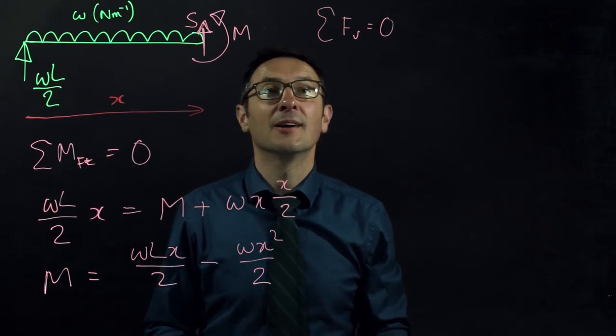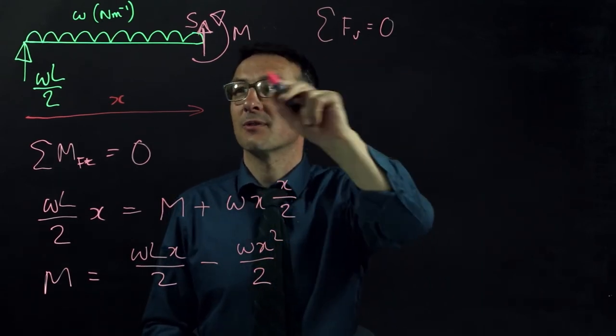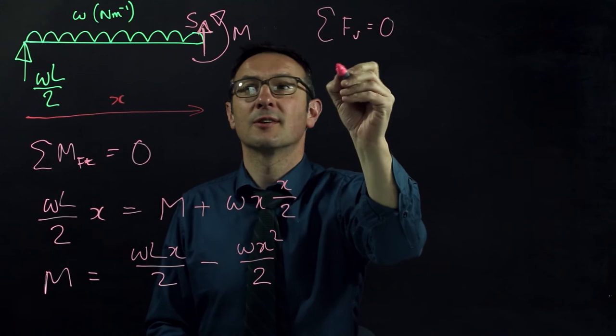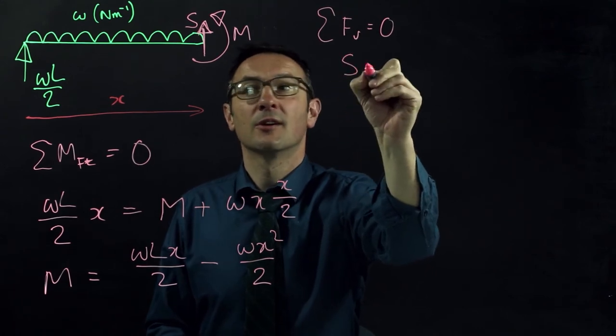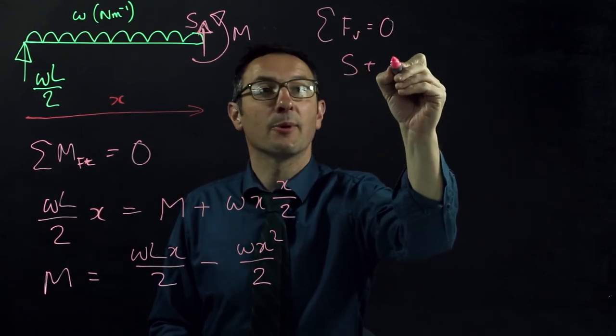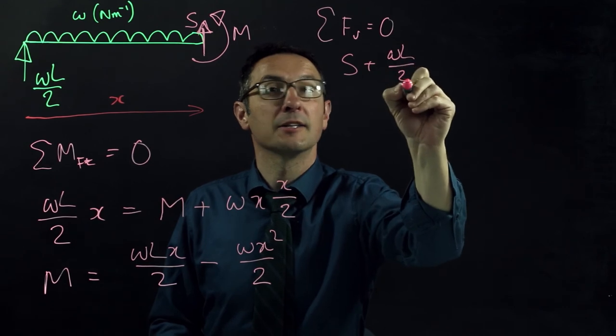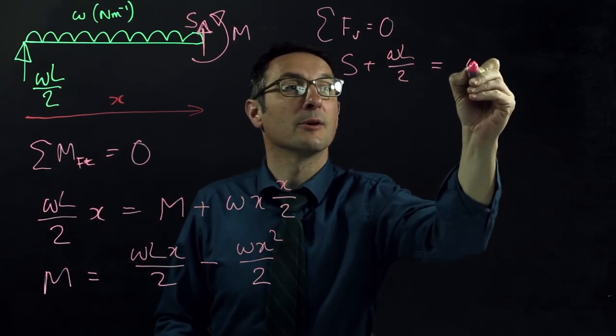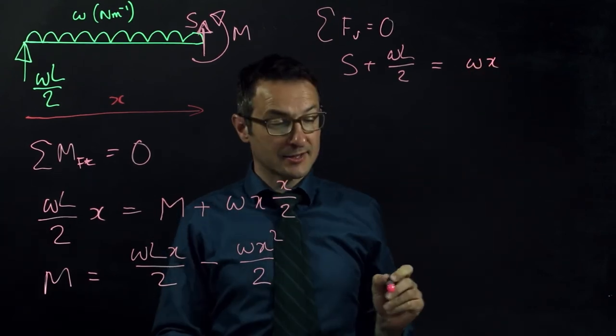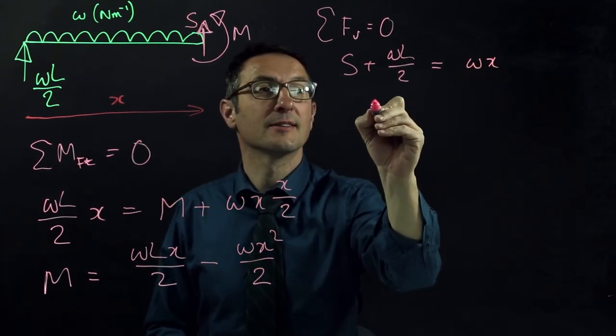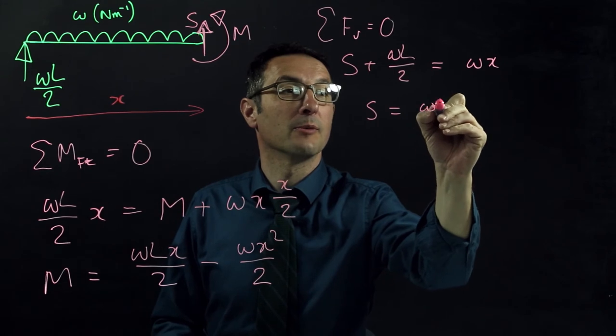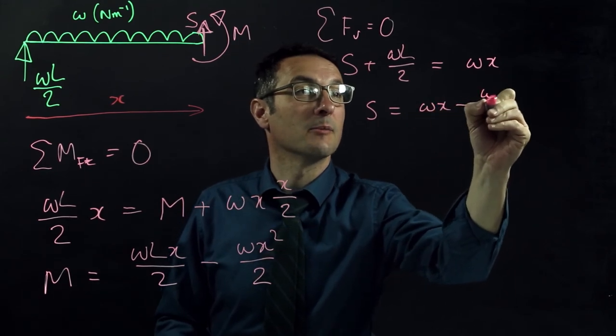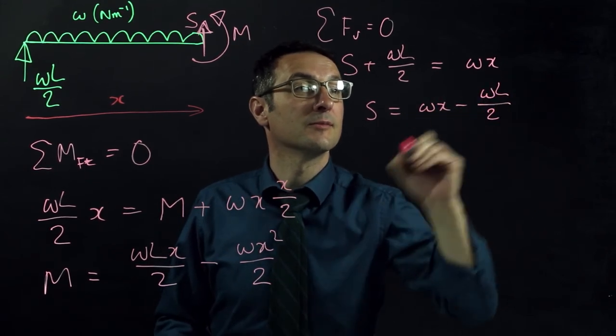So here I'm just saying what I'm doing. They all sum to 0. Vertical forces here, we've got S acting upwards. We've got WL over 2 acting upwards, and that is all balanced by W times x. So S is equal to Wx minus WL over 2.